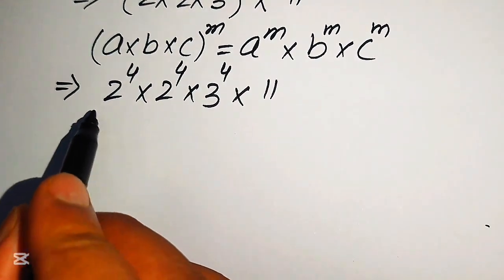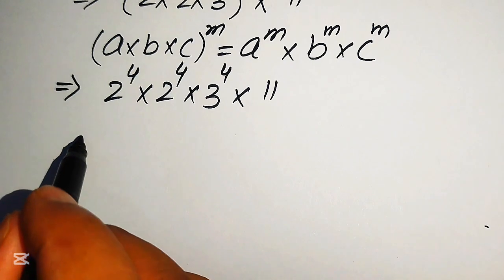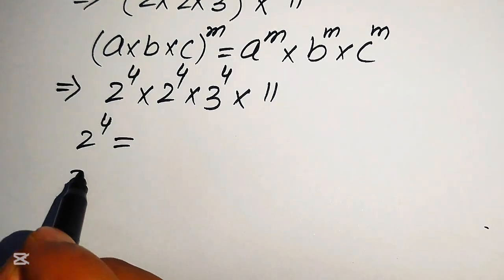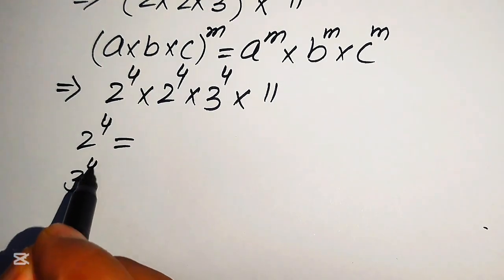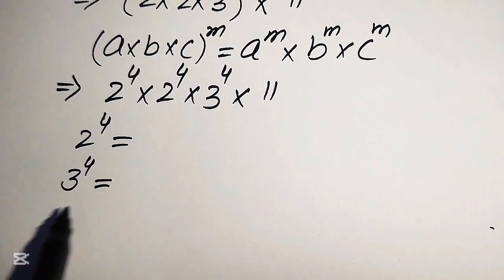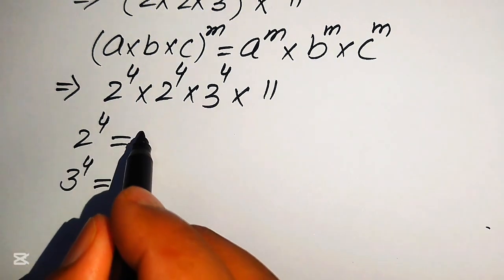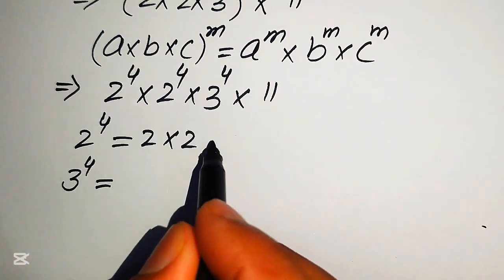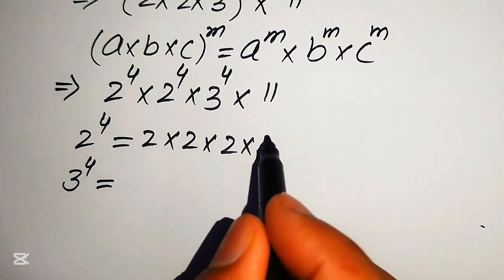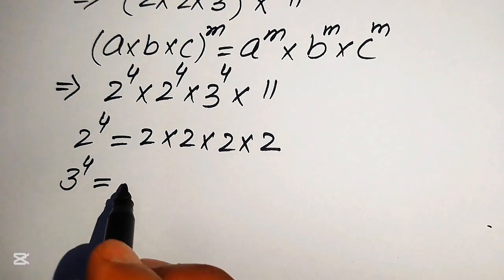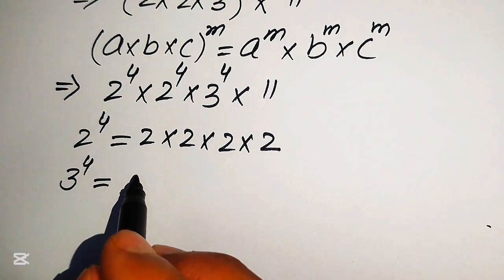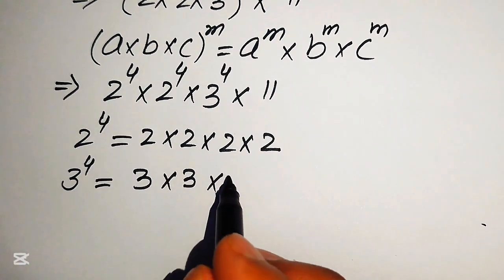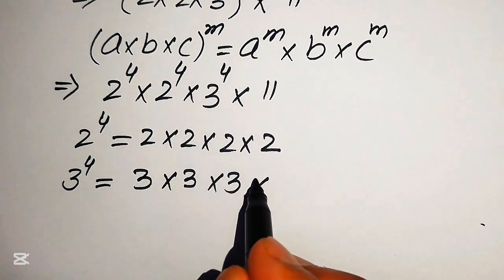Now we find the values of 2 to the power of 4 and 3 to the power of 4. We know that 2 to the power of 4 equals 2 multiplied by 2 multiplied by 2 multiplied by 2, and 3 to the power of 4 equals 3 multiplied by 3 multiplied by 3 multiplied by 3.